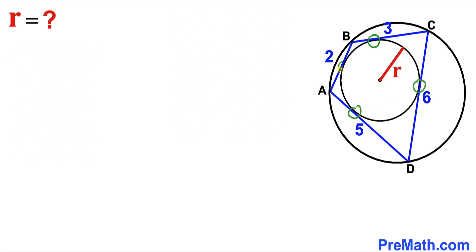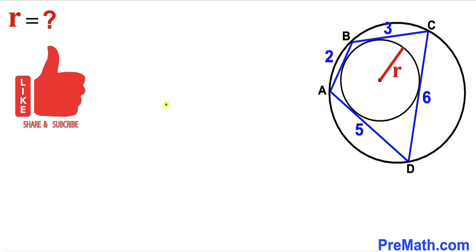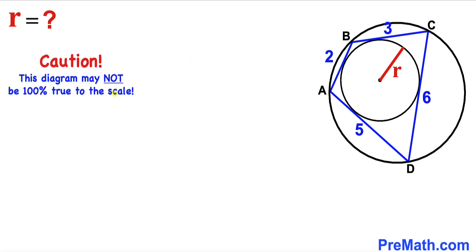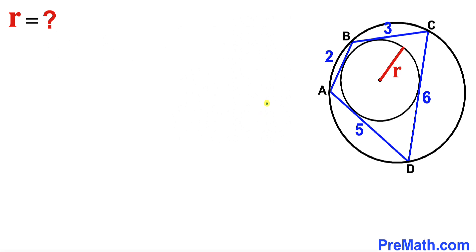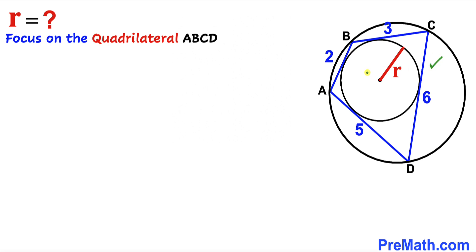These are the points of tangency, and our task is to calculate the radius of this inscribed circle. Please keep in mind that this figure may not be 100% true to scale. Let's get started. Here is our quadrilateral ABCD, and we are going to ignore the inscribed circle for now.